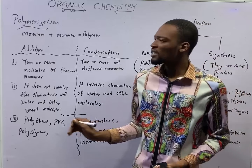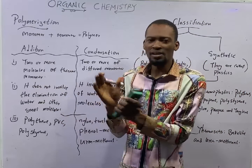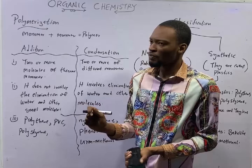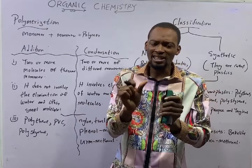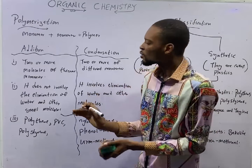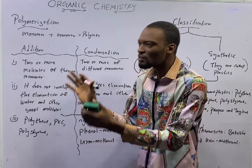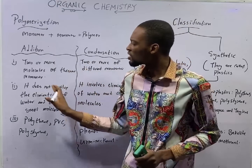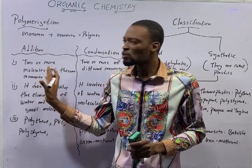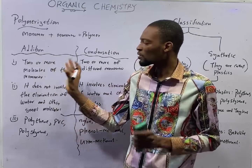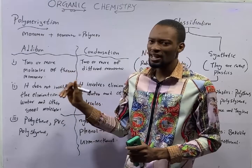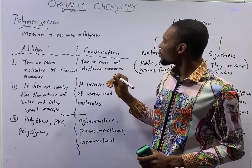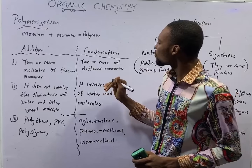For protein, we have so many amino acids — the same molecules — combining to form protein. In polyethene, you see so many ethene molecules combining to form polyethene, which means we have the same molecules. The monomers are the same.